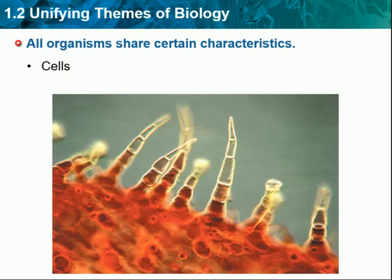All organisms are made up of one or more cells. A cell is the basic unit of life. Microscopic, single-celled organisms are the most common forms of life on Earth. A unicellular organism carries out all the functions of life, just as you do. Larger organisms are made of many cells and are called multicellular organisms. Different types of cells in a multicellular organism have specialized functions, like muscle cells that contract and relax, stomach cells that secrete digestive juices, and brain cells that interpret sensory information. Together, specialized cells make you a complete organism.